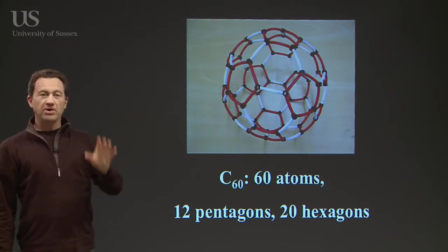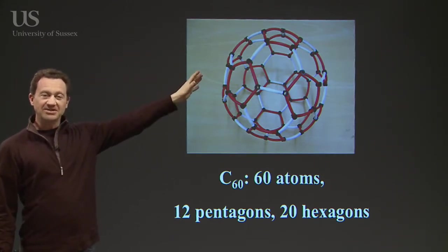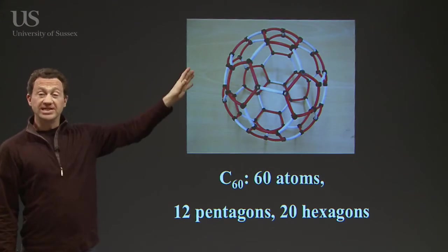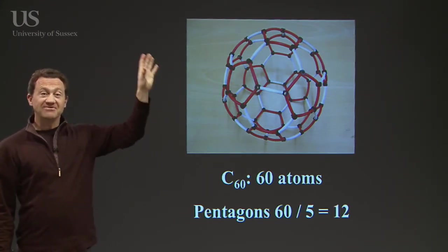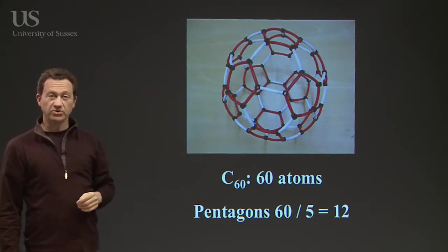Just to recap, we've got the C60 molecule. It's got 60 atoms, 12 pentagons, 20 hexagons. Don't have to worry about the hexagons at all. 60 divided by 5 is 12, so there's 12 pentagons in this beautiful structure.